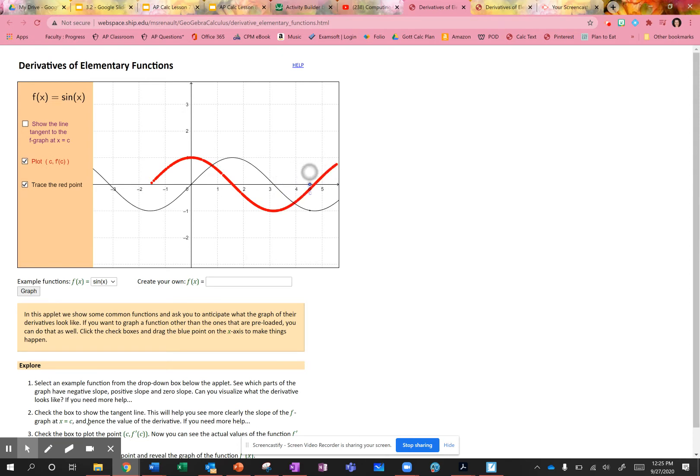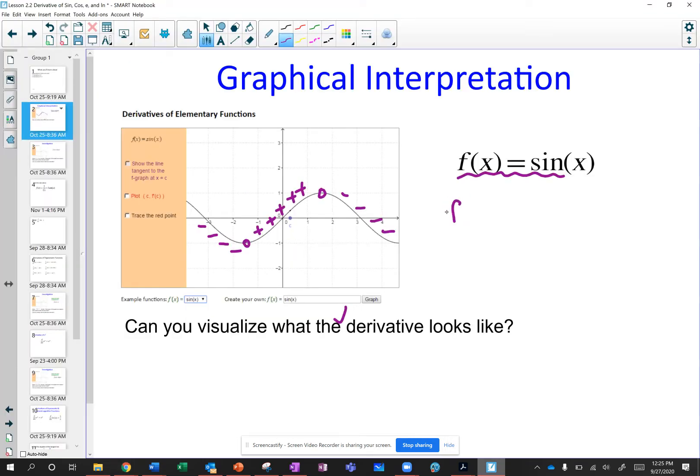So what function does this look like? Well, this looks like cosine, right? Because doesn't cosine start at 0, 1? And you are accurate. So the derivative of sine is equal to cosine of x.